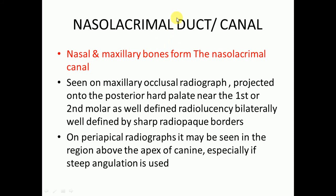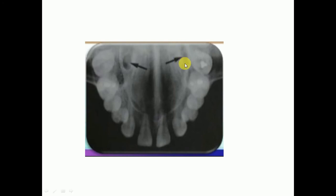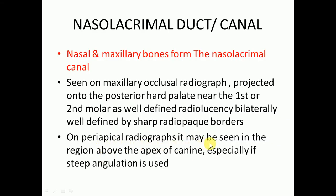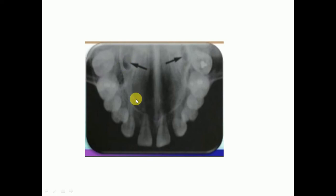Then we have the nasolacrimal duct, which drains tears into the nasal cavity through the inferior meatus, below the inferior concha. The nasal and maxillary bones form the nasolacrimal canal. It is seen on maxillary occlusal radiographs, projected onto the posterior hard palate near the first or second molar, as a well-defined radiolucency bilaterally with sharp radiopaque borders. On periapical radiographs it may be seen in the region above the apex of the canine, especially if steep angulation is used.